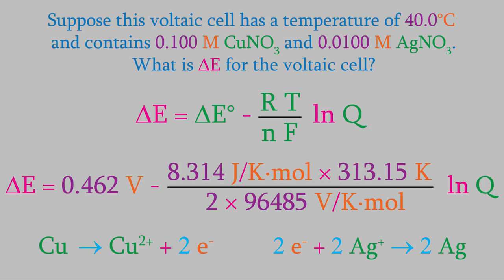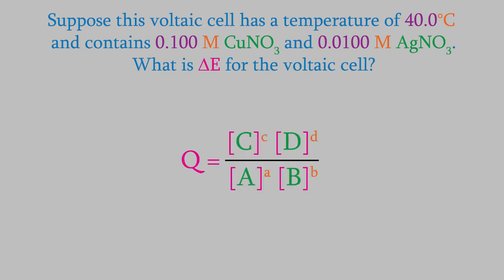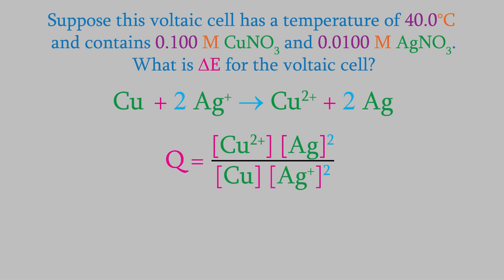For Q, we need to be a little careful. Remember, Q is products over reactants. From our balanced overall reaction, we can see that Q will be this. As usual, we leave out the solids so the copper and silver metals get dropped.